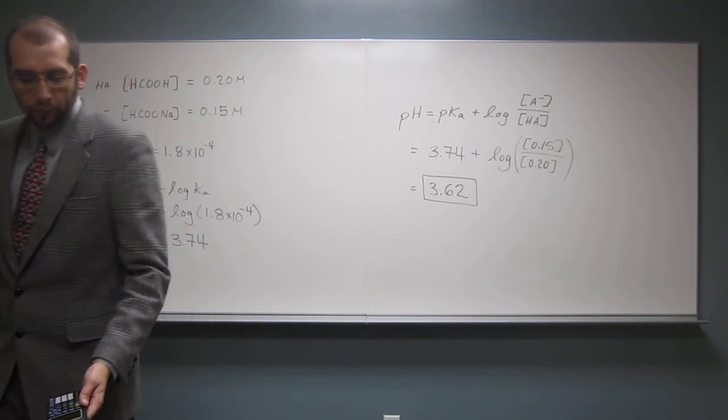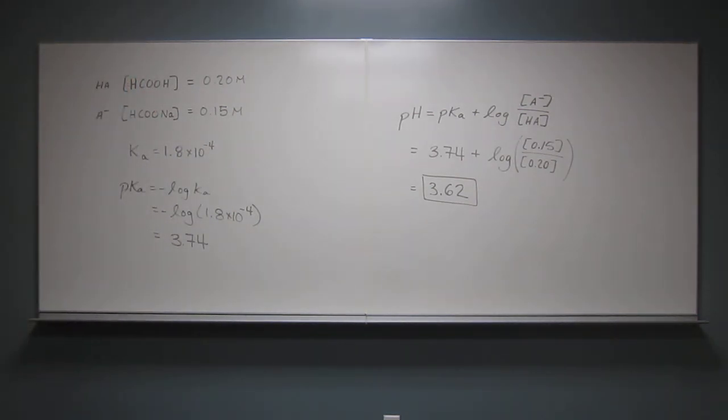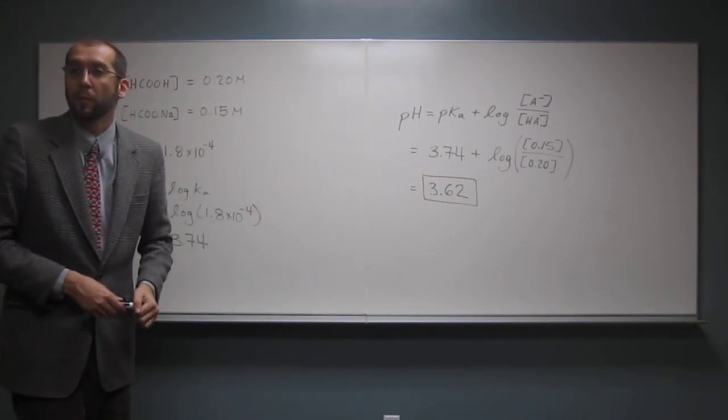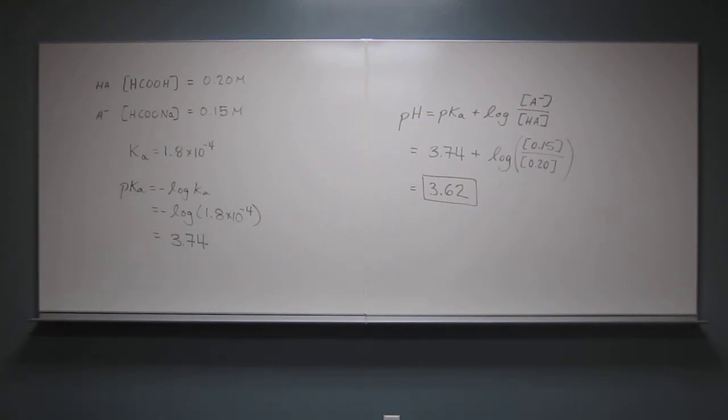And like Frank showed us before we started the recording, we could actually have done this with an ice table using the weak acid ice table, but Henderson-Hasselbalch kind of makes it a little easier. Okay, can we kill it, or are there any questions? No, okay.